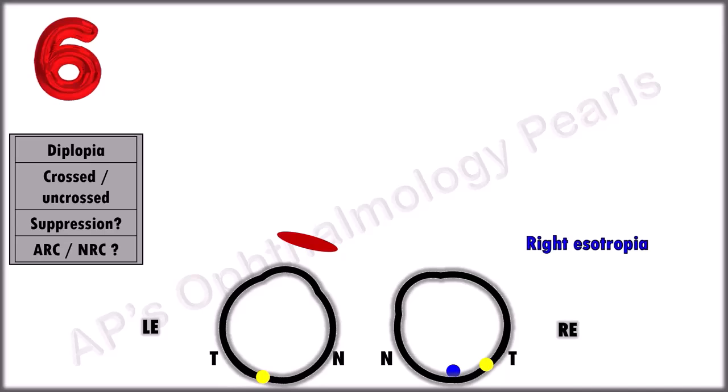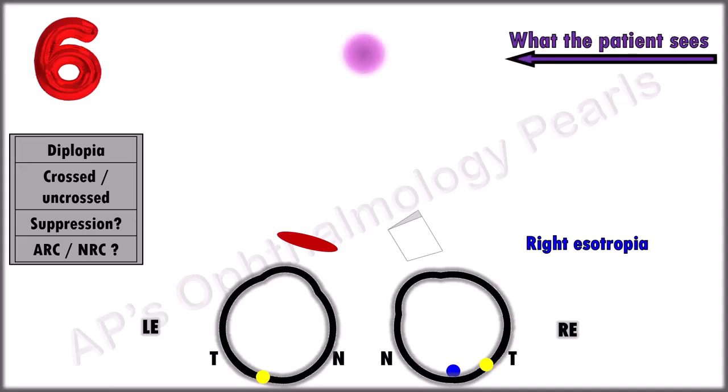Scenario 6. This is another patient of esotropia. A prism is placed in front of the tropic eye to neutralize the deviation. This is what the patient sees.